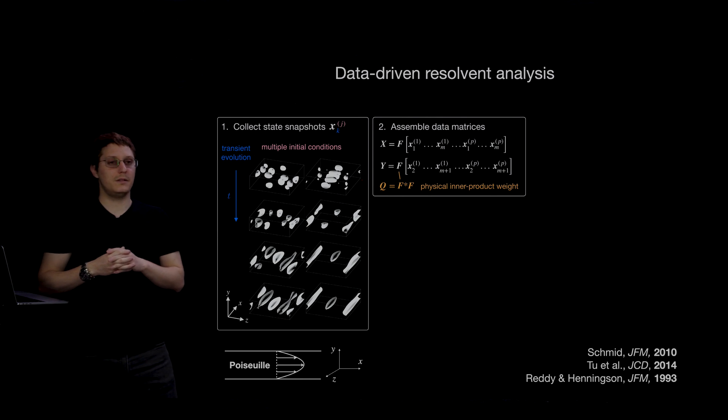And the F matrix that you see there is just a weighting to adjust the inner product, so that the L2 norm measures a physically meaningful quantity, which in this case is the perturbation kinetic energy.